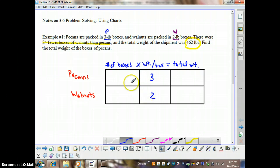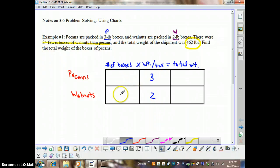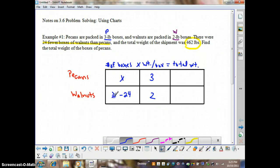And now we need to come up with an expression that compares the two. There are 20 fewer boxes of walnuts than pecans. So there's fewer walnuts than pecans. There's 24 fewer boxes here than there are here. So if we have x boxes of pecans, we have 24 fewer boxes of walnuts. We'll have x minus 24 boxes of walnuts.